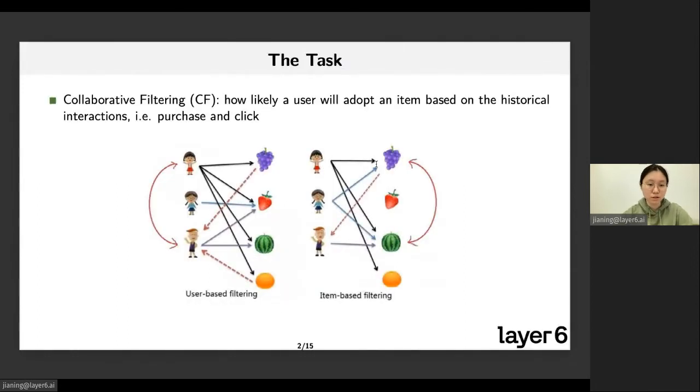The task we are tackling in our paper is collaborative filtering for recommender systems. It is to predict users' preferences for a set of items based on historical interactions only. To build a recommender system, collaborative filtering is one of the most popular approaches. The key of collaborative filtering is to find similarities among users, similarities among items, and similarities between users and items.